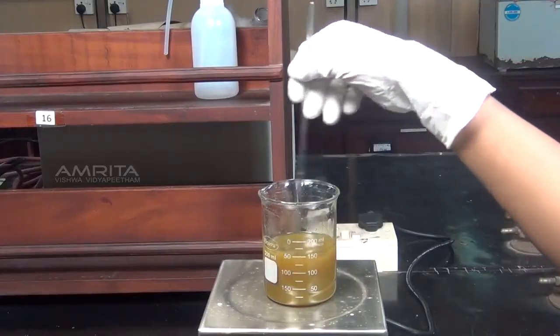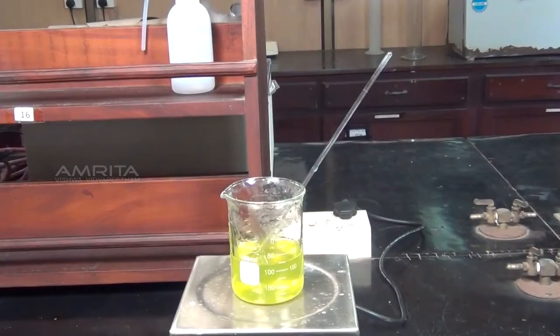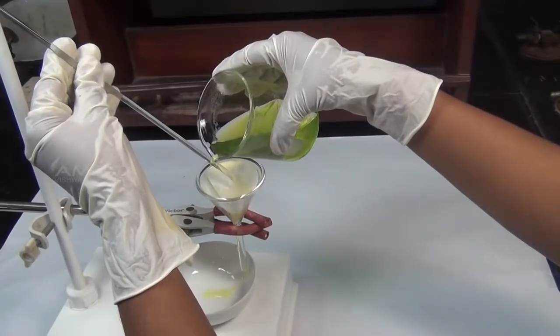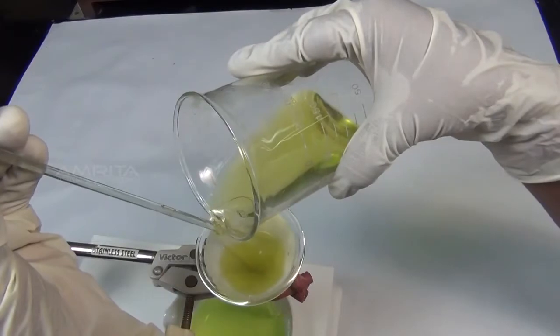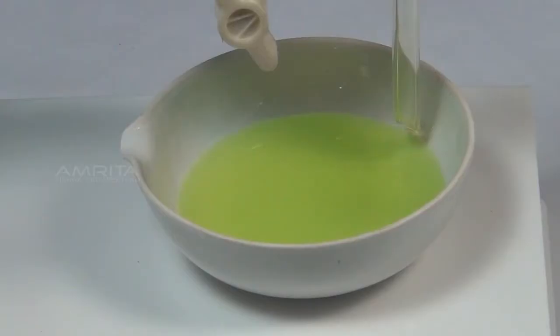If the precipitate does not dissolve, then warm it and leave the contents for some time. Then filter the solution into a china dish using a funnel and filter paper. The stem of the funnel should touch the wall of the china dish to avoid the solution splashing out.